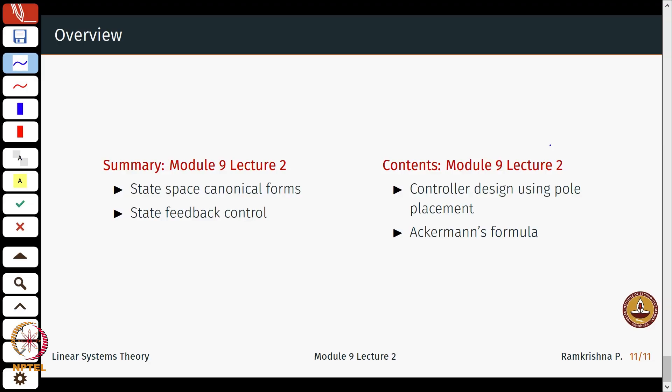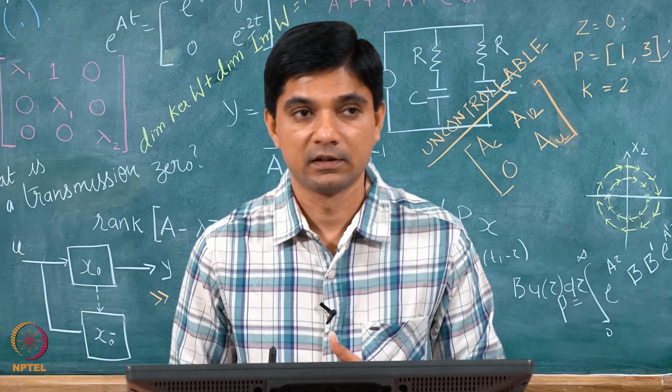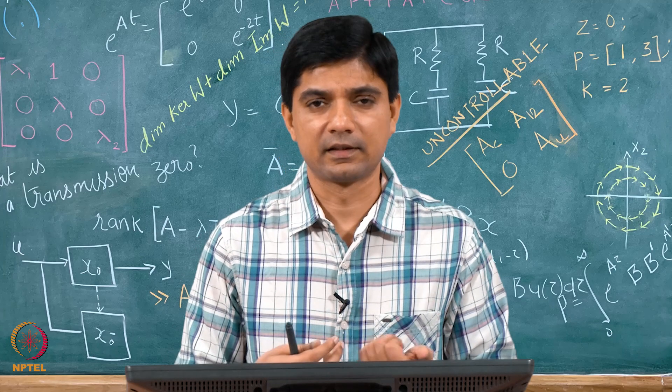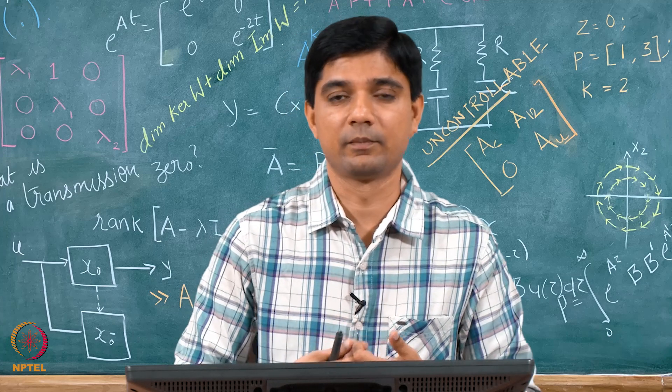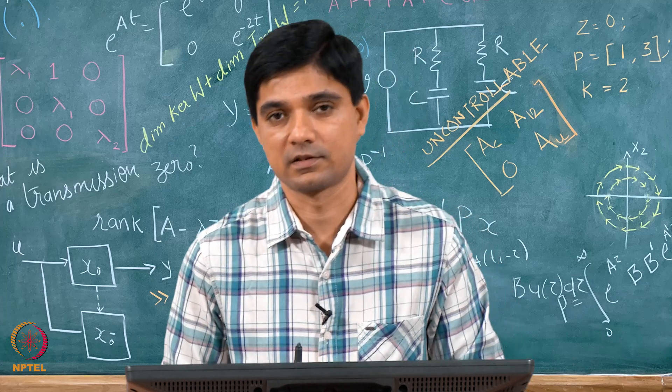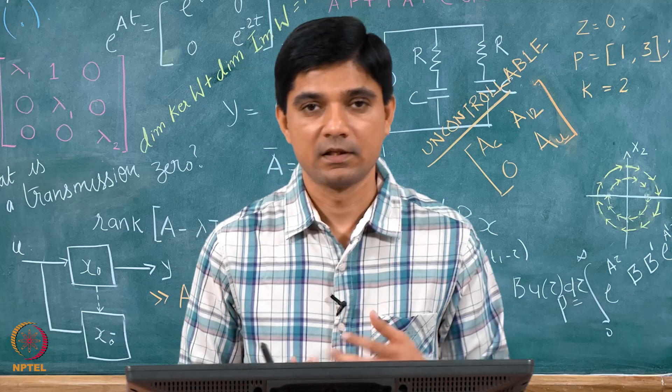To summarize, we have looked at state space canonical forms and how to formulate the feedback control problem. In the next lecture I will explicitly tell you the methods of designing these controllers — there are at least three methods — and we will also derive the famous Ackermann's formula. Thanks for listening.